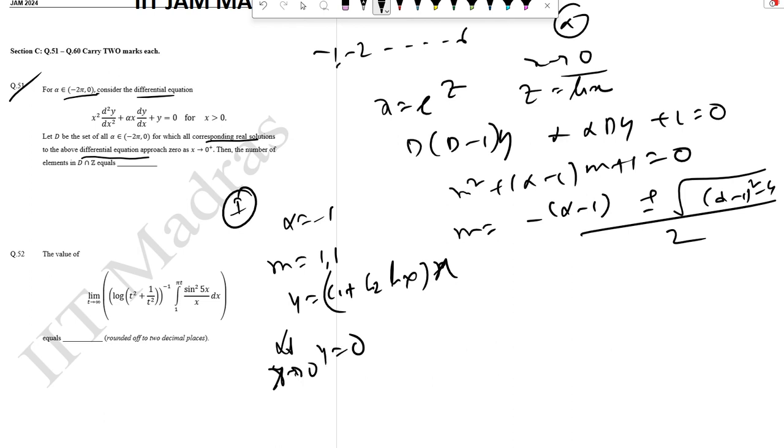Case 2: alpha equal to minus 2. So m equal to 3 plus minus root 5 by 2. So y equal to c1 x to the power m1 plus c2 x to the power m2. This will also satisfy the order case.